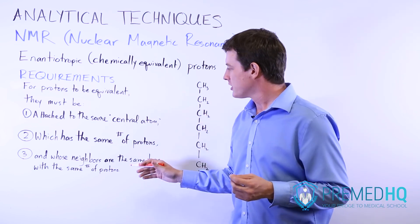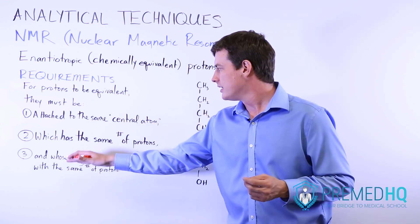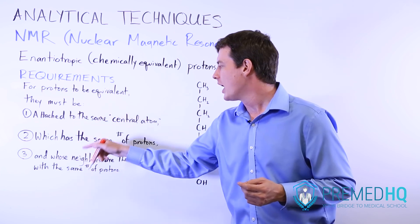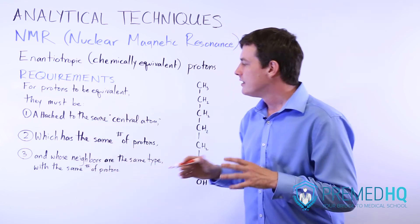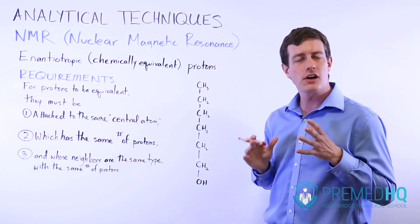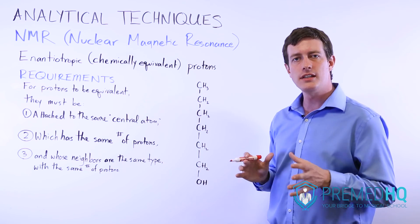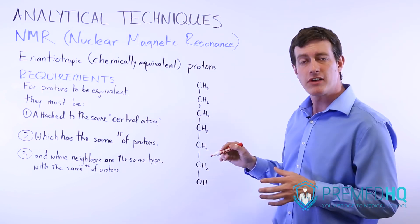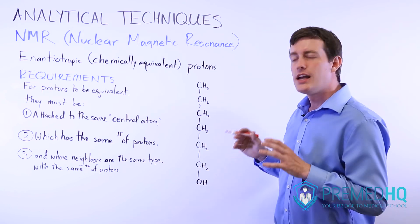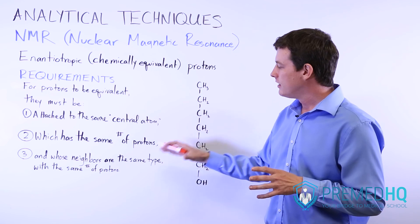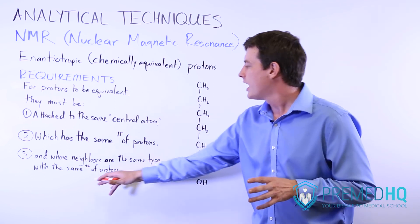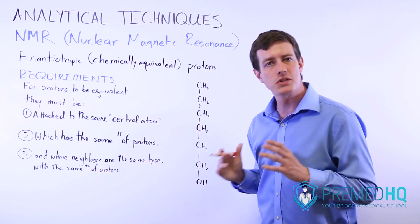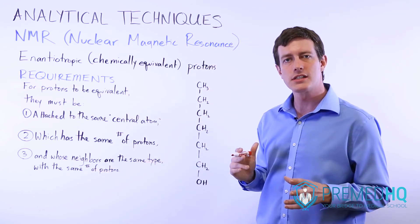The third condition is that protons need to meet the first two requirements and also have neighbors that are identical — the same type of atom as neighbors, and those neighbors need to have the exact same number of protons attached to them.